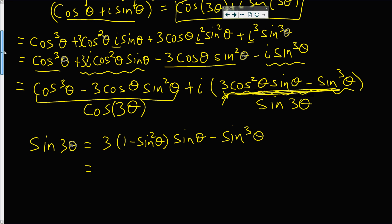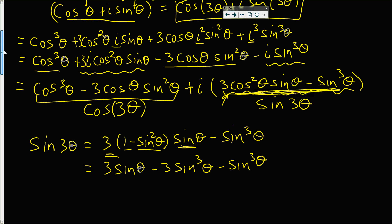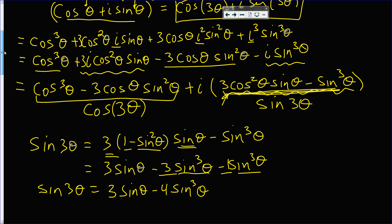So this equals 3(1 − sin²θ) sinθ − sin³θ, which gives 3 sinθ minus 3 sin³θ minus sin³θ. You take away three of them and then one more — four altogether. So sine of 3 theta equals 3 sinθ minus 4 sin³θ. This here is really important.